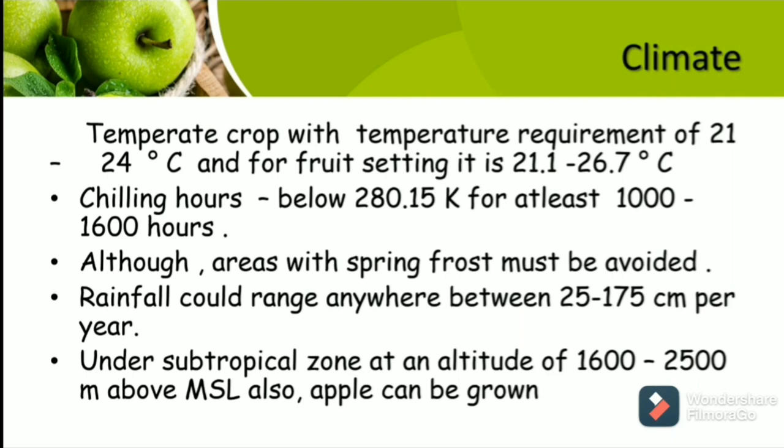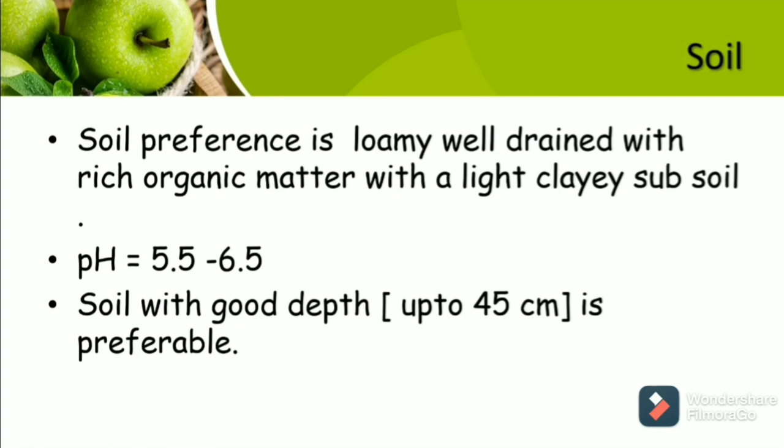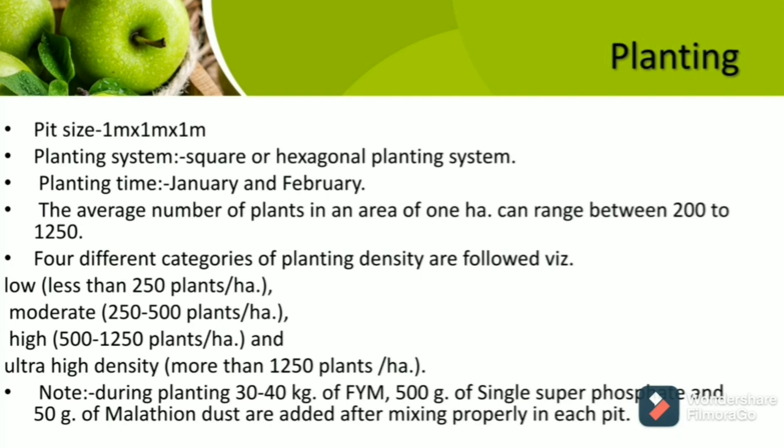Regarding soil: Soil preference is loamy, well-drained with rich organic matter with a light clay subsoil. pH should be 5.5 to 6.5. Soil with a good depth of 45 cm is preferable. For planting, pit size should be 1 meter in length, breadth, and depth. Planting system is square or hexagonal. Planting time is between January to February. The average number of plants per hectare can range between 200 to 1,250.